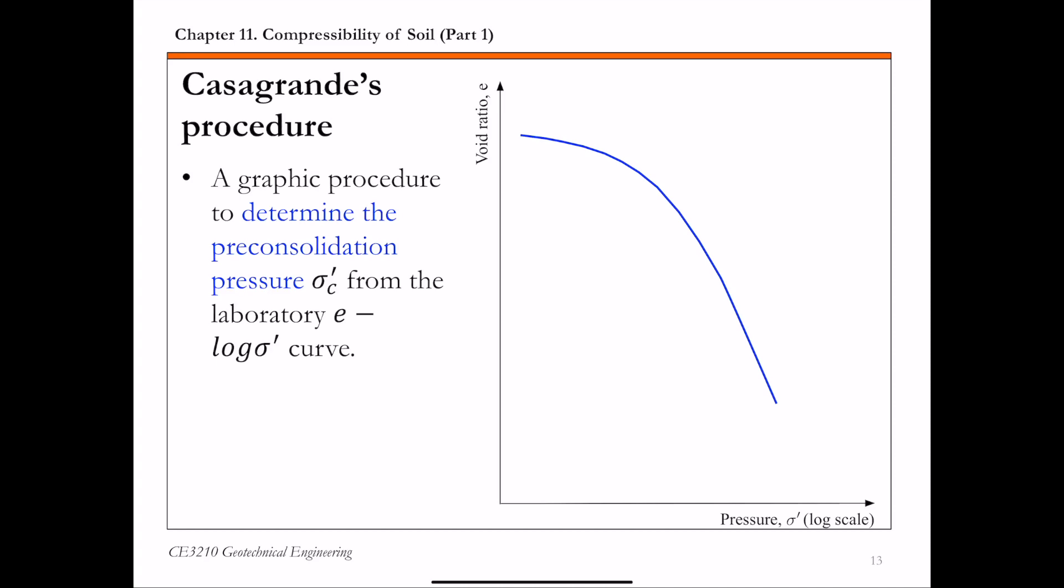One of the commonly used ways to determine the pre-consolidation pressure is the Casagrande's procedure. This is a graphic procedure that you can use to determine sigma c prime, the pre-consolidation pressure from your lab e versus log sigma prime curve. I'm going to use this hypothetical e log sigma prime curve to illustrate this procedure.